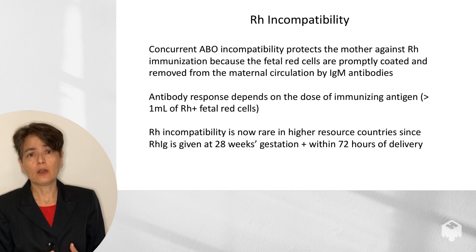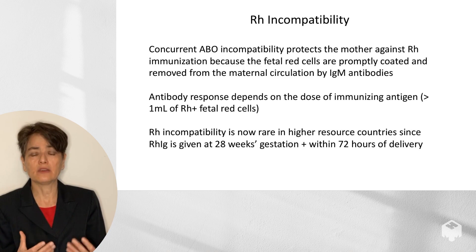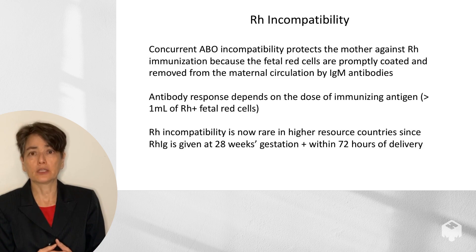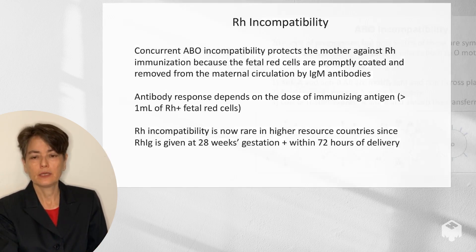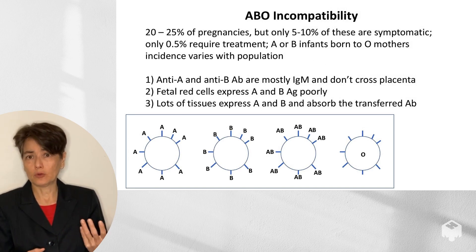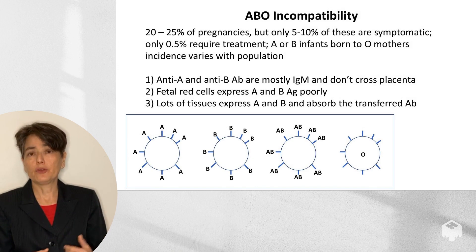As mentioned, RH incompatibility is quite uncommon in higher-resource countries because we give prophylactic RH immunoglobulin at 28 weeks gestation and within 72 hours of delivery if there is RH incompatibility. Because RH incompatibility is no longer very common, ABO incompatibility is another important consideration.